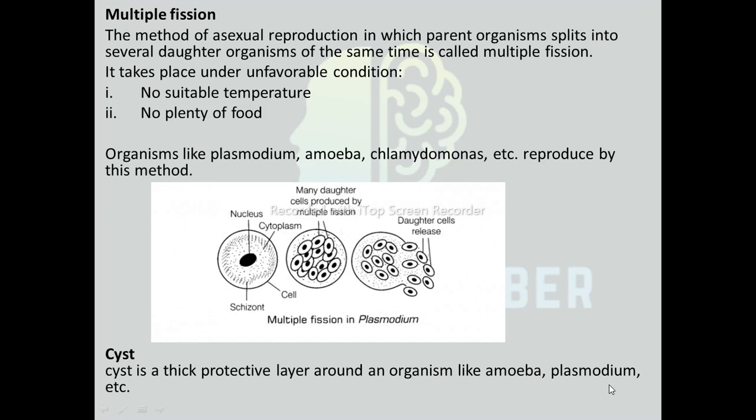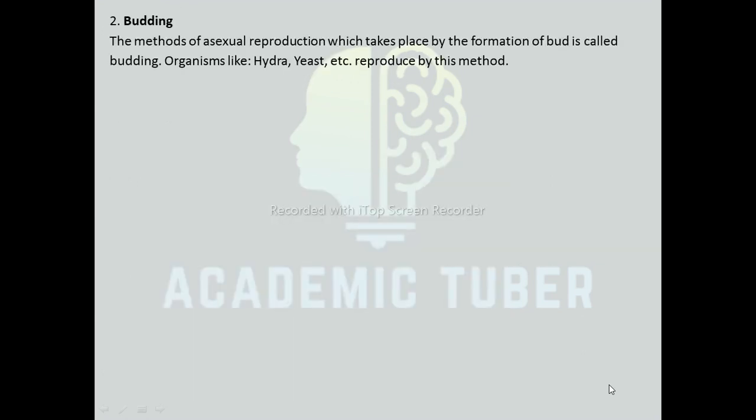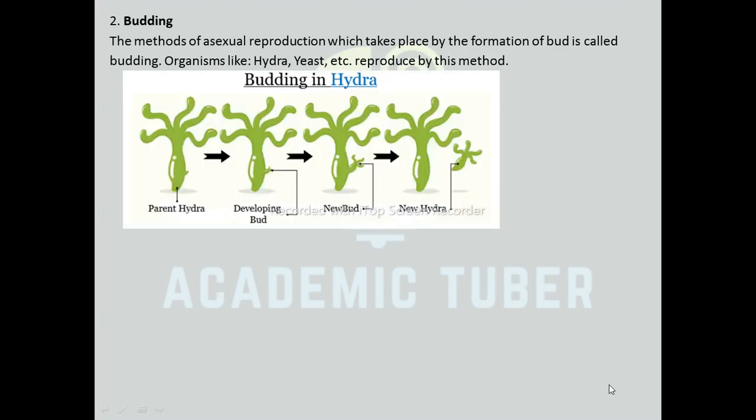Cyst is the thick protective layer around organisms like Amoeba and Plasmodium. Budding is the method of asexual reproduction which takes place by the formation of a bud. Organisms like Hydra reproduce by this method. Here is a diagram showing Budding in Hydra — the parent Hydra develops a small outgrowth known as a bud, and that new bud gives rise to a new individual organism.